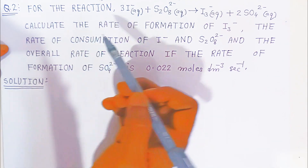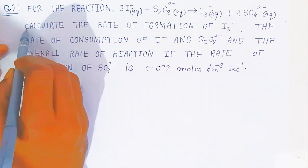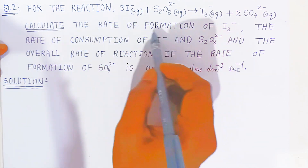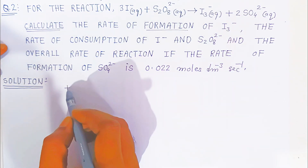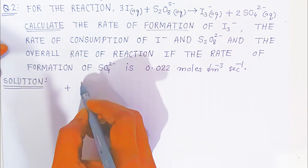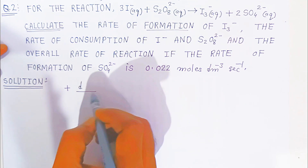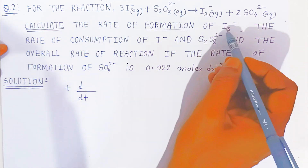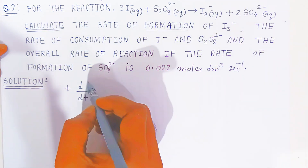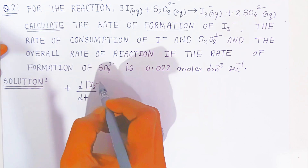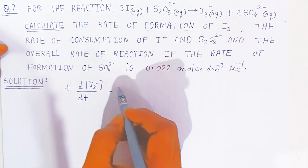Now we have to calculate the rate of formation. Rate of formation is written with a plus symbol, because it is a rate. Rate of formation is nothing but d/dt — the rate of change of concentration of triiodide ion. What will be the rate of formation of triiodide? That is what you have to find.